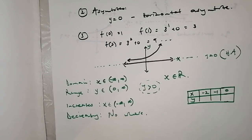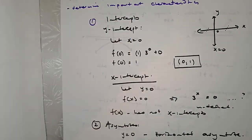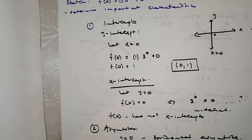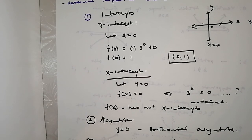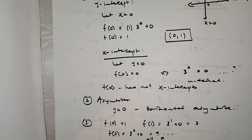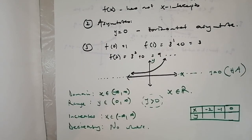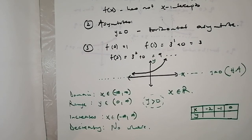That was an introduction to exponential functions — a basic example where y = 0 was the horizontal asymptote. Stay tuned because in the next video we'll do an example where b is a fraction rather than a whole number, and we'll appreciate how the shape of the graph changes. Enjoy the rest of your day, stay blessed, and have a fantastic day!